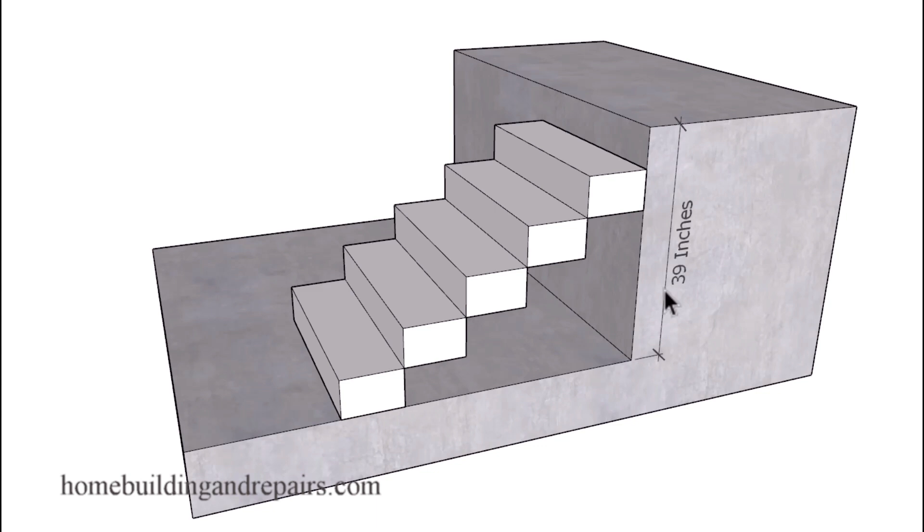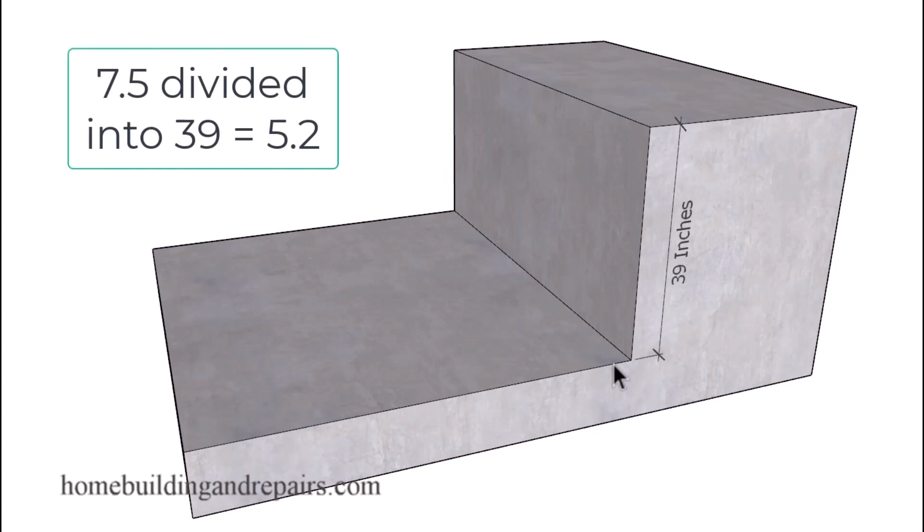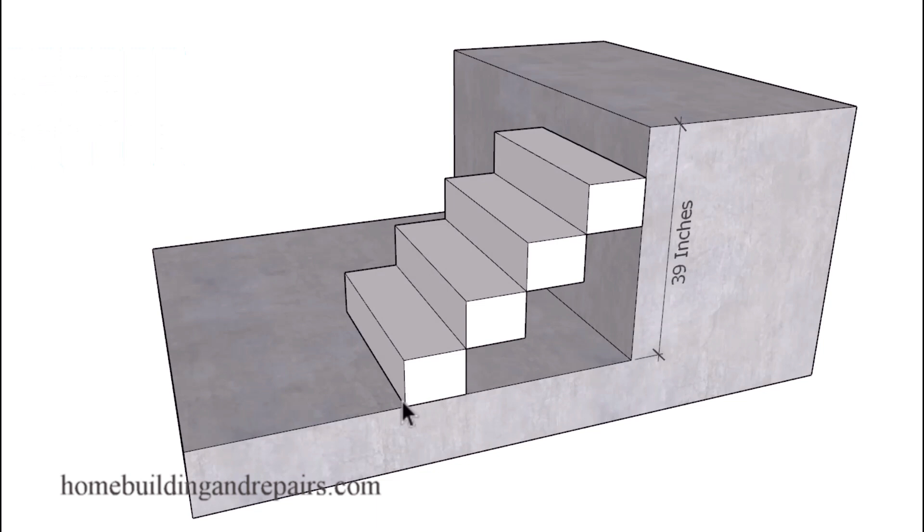Keep in mind that it's a starting point measurement. It does not guarantee you will get that measurement. If I divide 7.5 into 39 inches, that's going to provide me with 5.2. I can then take the number 5 or 6. If I divide 5 into 39 inches, I'm going to end up with a 7.8 inch riser.